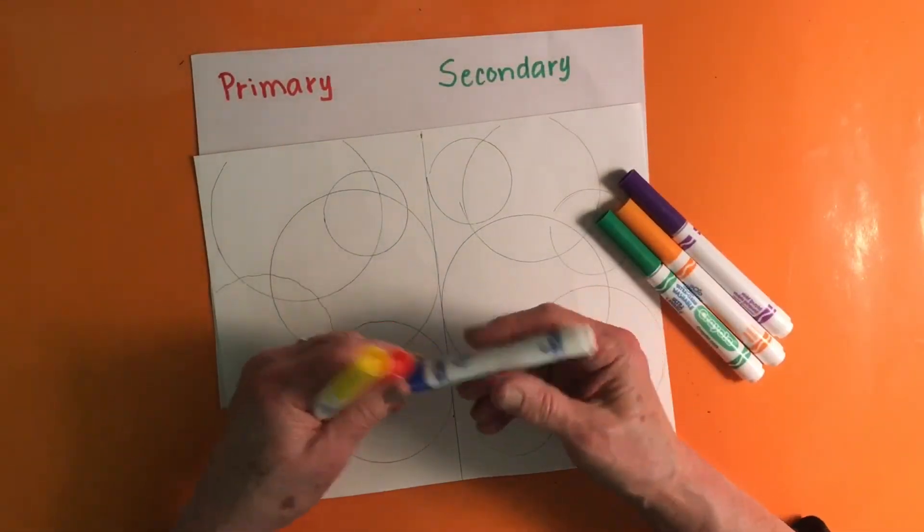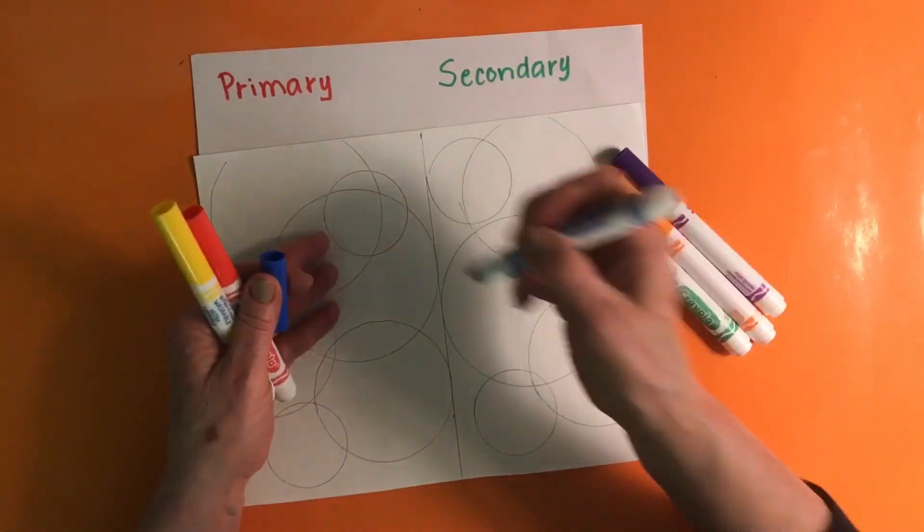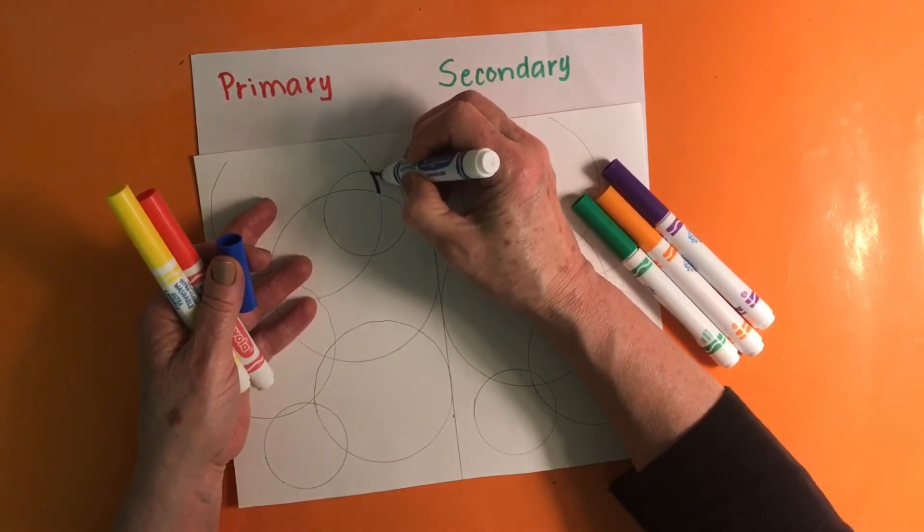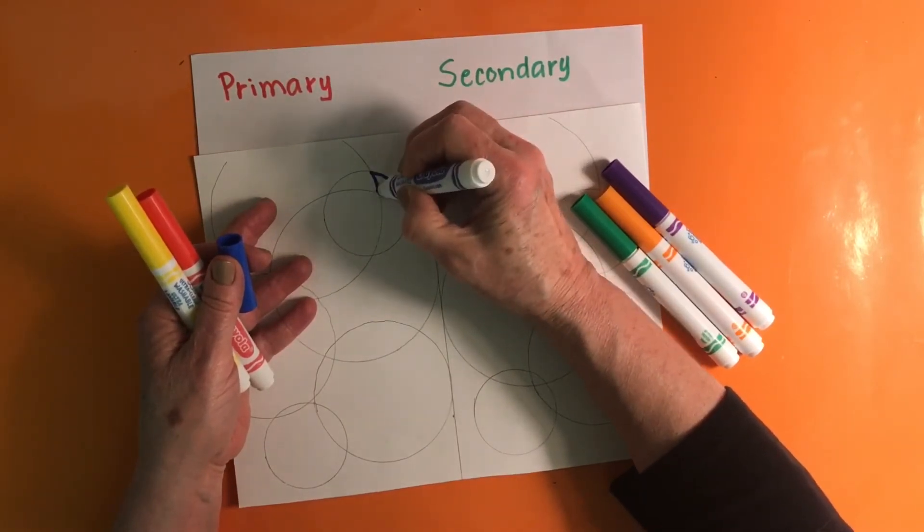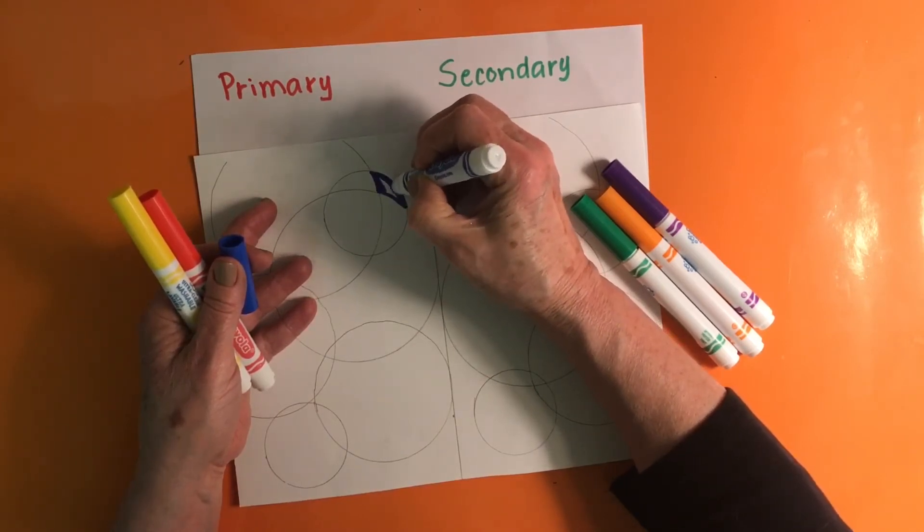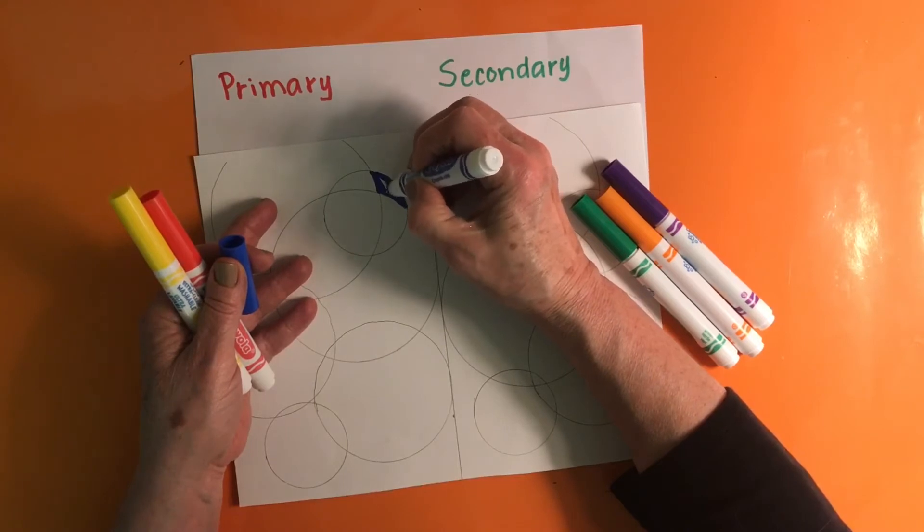Once I have my circles on both sides, I'm going to start filling it in with marker. I'll start out with blue. And it helps to trace the shape that you're going to be coloring first before you fill it in. Makes the lines a little bit neater.